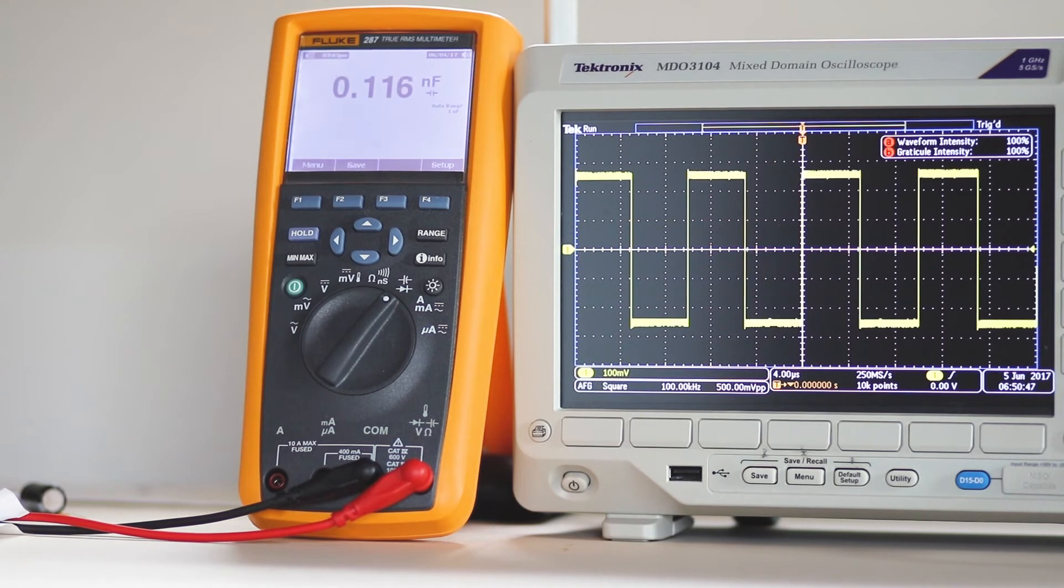Electrolytic capacitors can be checked using the ohms mode. If the meter is not auto-ranging, set it to the megaohm range and connect the probe to the lead.